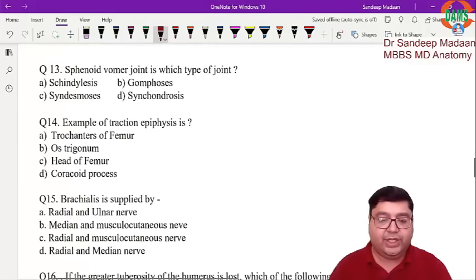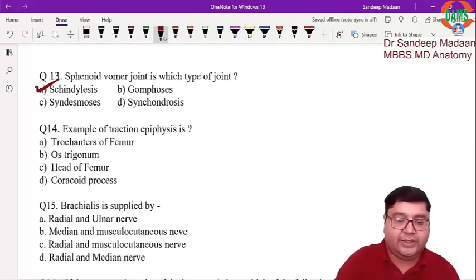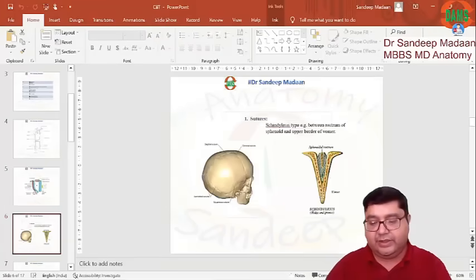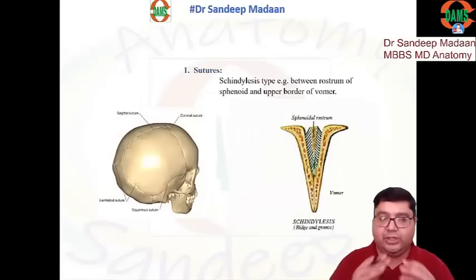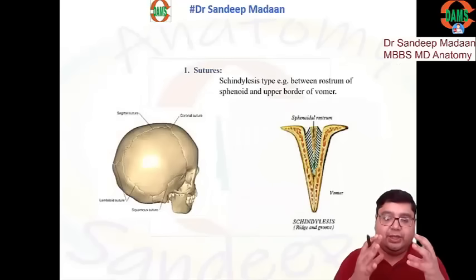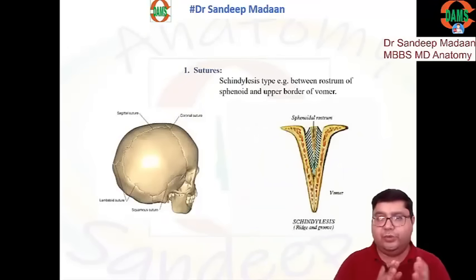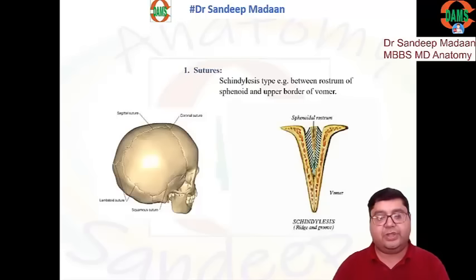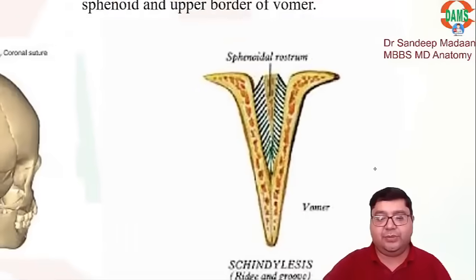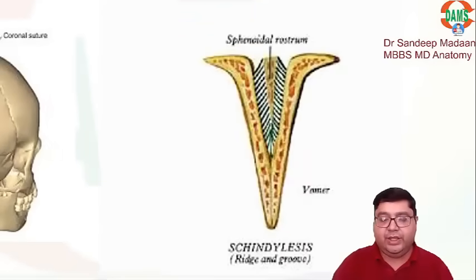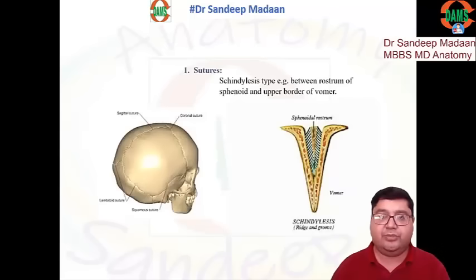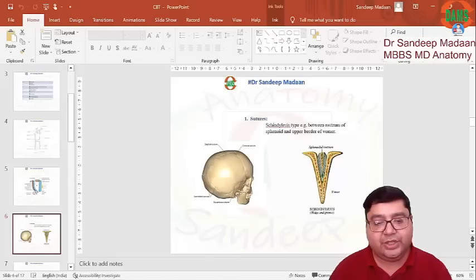The sphenoid-vomer joint is what type of joint? It is a schindylesis joint. All skull bones have fibrous joints called sutures, and schindylesis is a special type of suture. It is the specific name given to the joint where the vomer articulates with the rostrum of the sphenoid — a type of suture with the special name schindylesis.